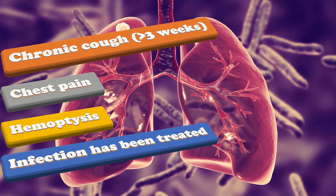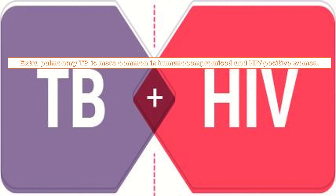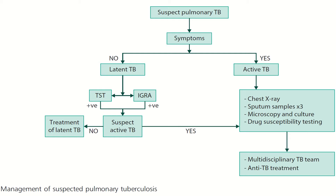Though pulmonary tuberculosis is the commonest form, extra-pulmonary tuberculosis is more common in immunocompromised and HIV-positive women. If we suspect pulmonary tuberculosis, we look for symptoms of tuberculosis.